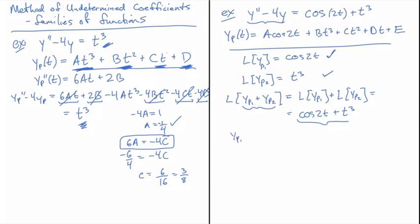In which case I would solve the problem with yp1 of t equal A cosine of 2t, go through that calculation, and then do the yp2. This one is going to be bt cubed plus ct squared plus dt plus e. This is just a good way of managing real estate on your page.